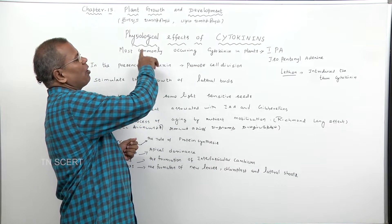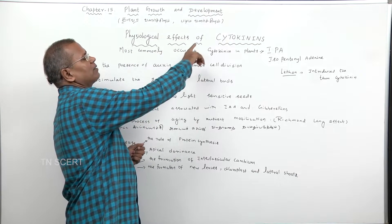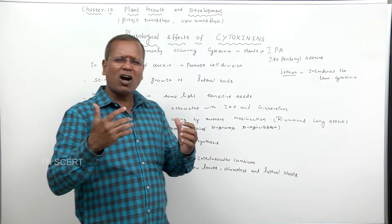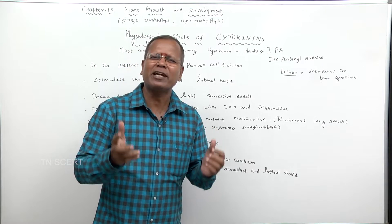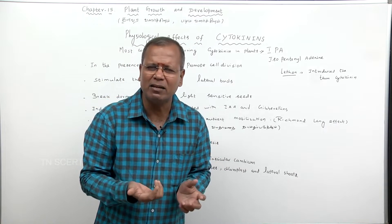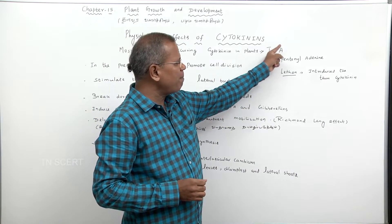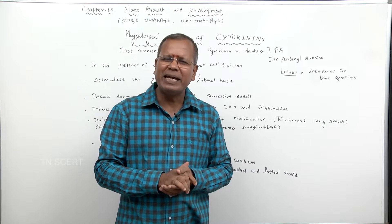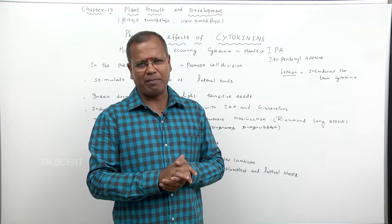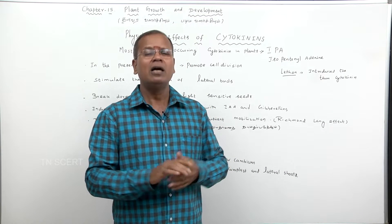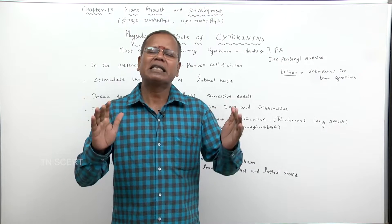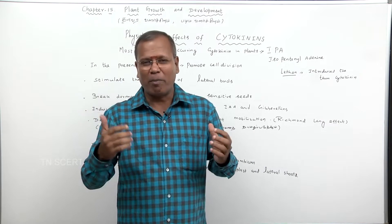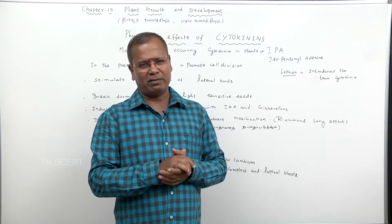The most commonly occurring cytokinin in plants is IPA — Isopentanyl adenine.